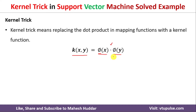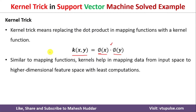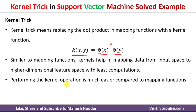To avoid that, we should use an equivalent kernel — that is nothing but the kernel trick. Whenever we use a kernel, it helps us map the data from input space into a higher-dimensional feature space with much less computation. Performing the kernel trick is much easier compared to using the mapping function directly.